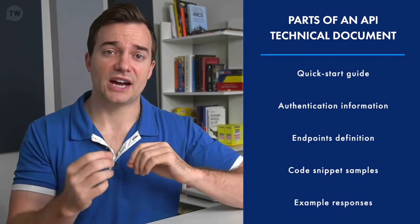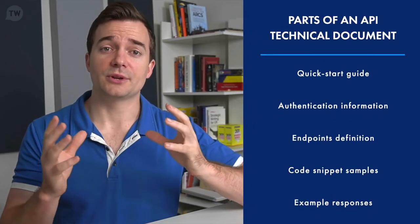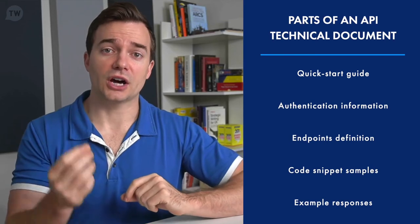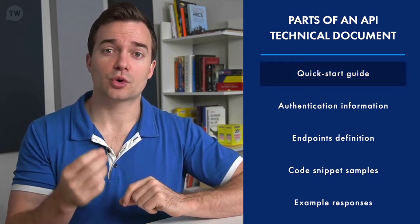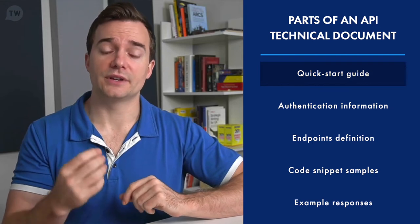Although there are APIs of different sizes and scopes that will have documents with more or less content, every such document will have five sections. These are a quick start guide, which is a shortened version or a summary of the entire document.